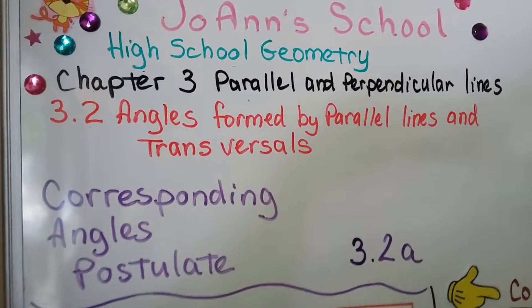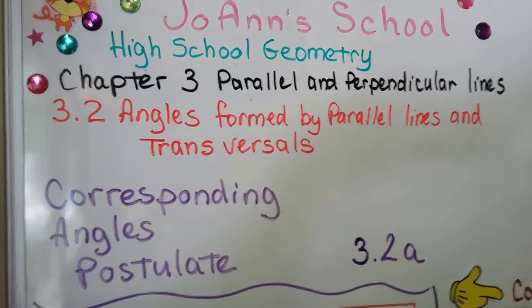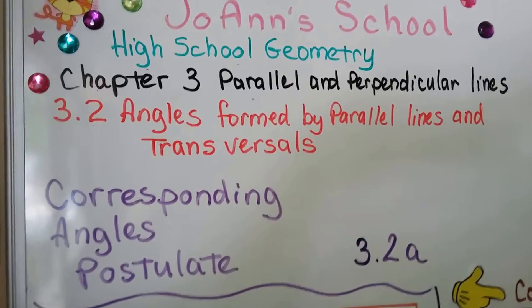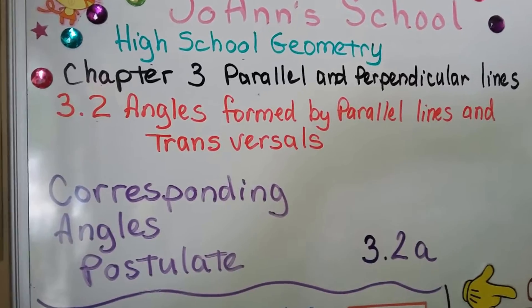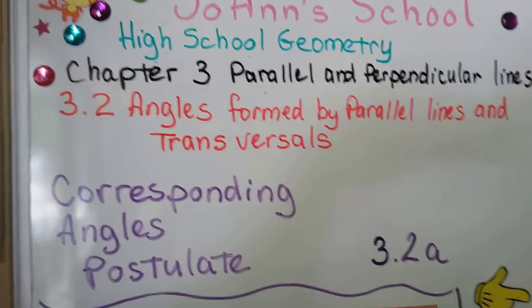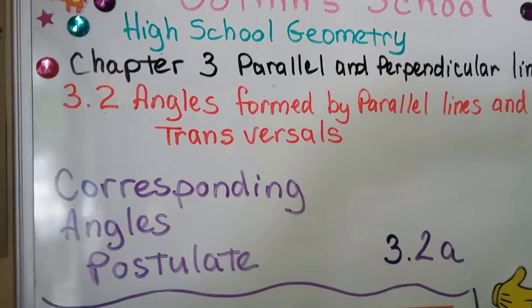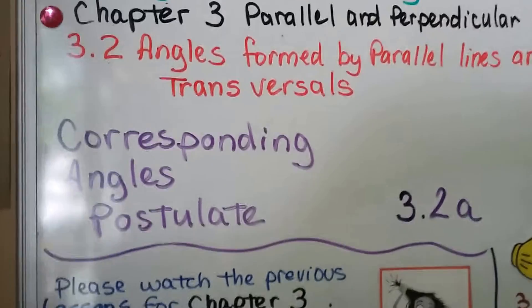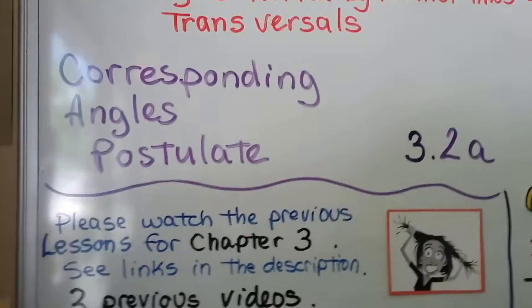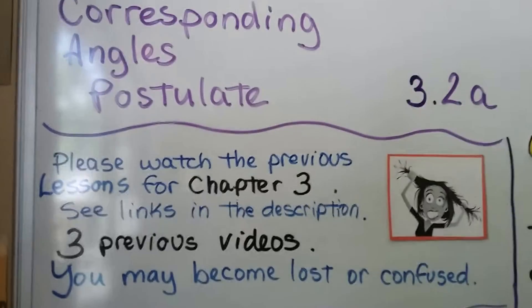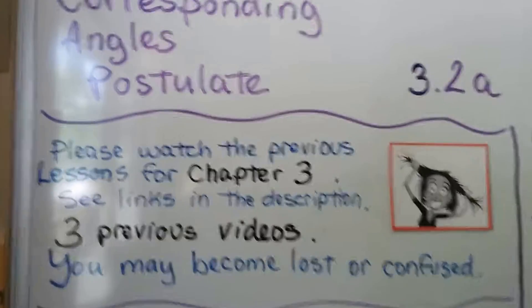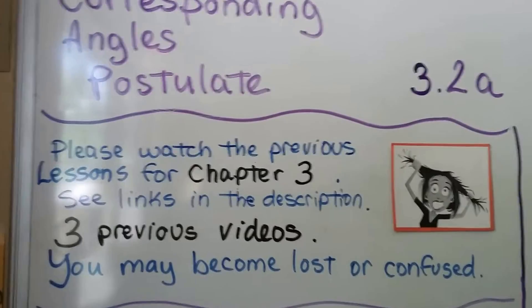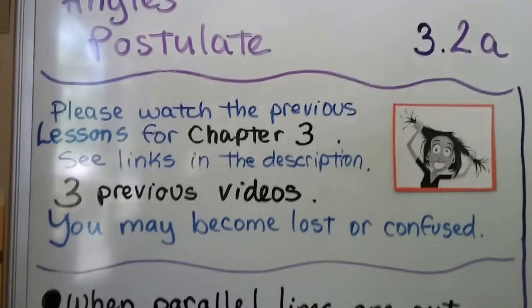We're on lesson 3.2 about angles formed by parallel lines and transversals. This is 3.2a about the corresponding angles postulate. We've got three previous videos for this chapter — if you get lost, they're linked in the geometry playlist in the description.